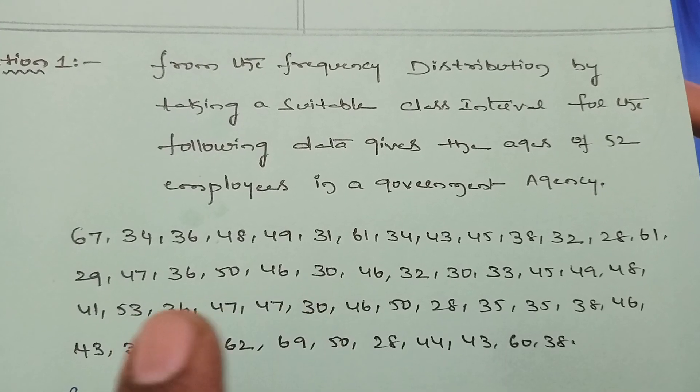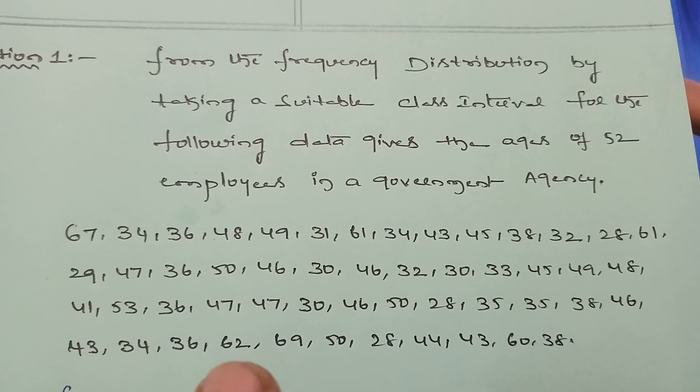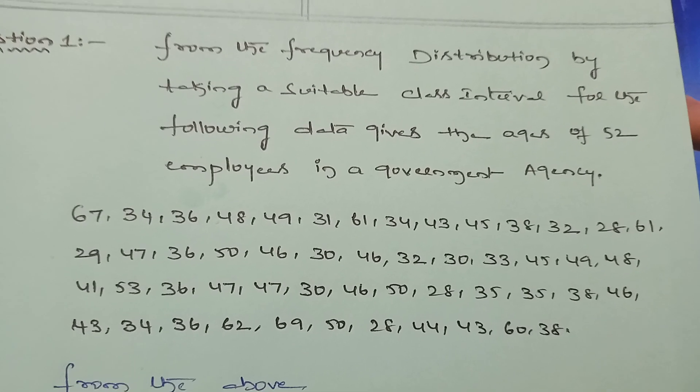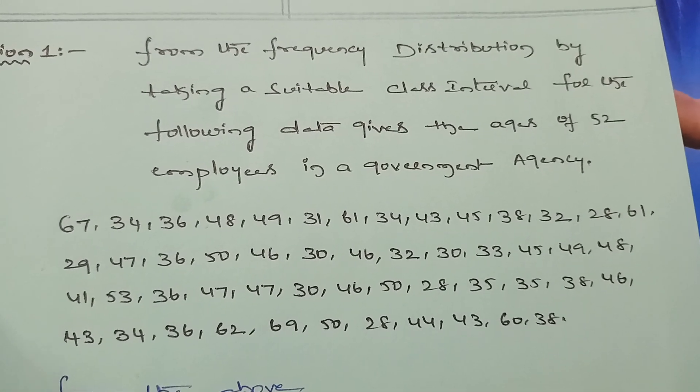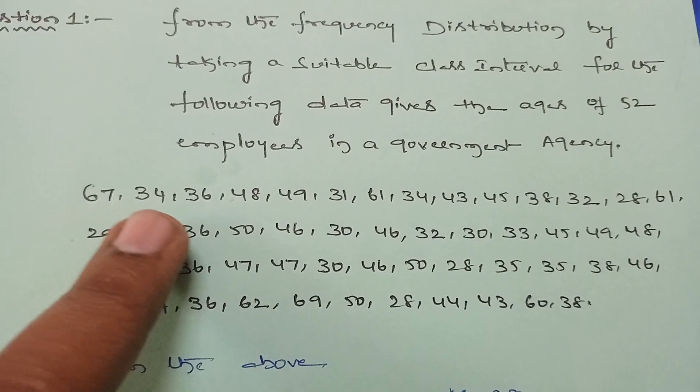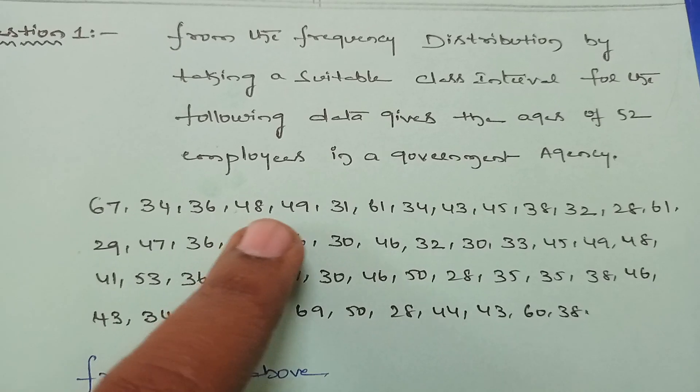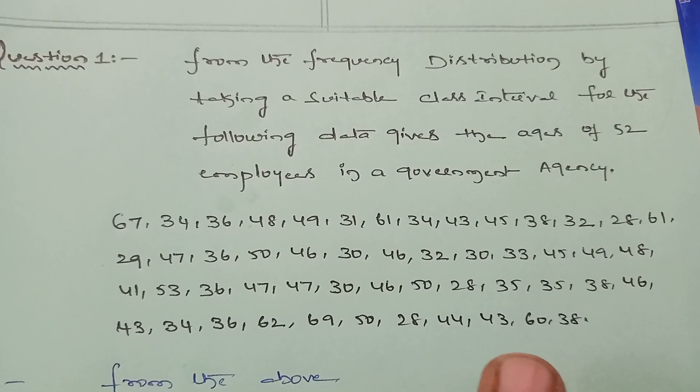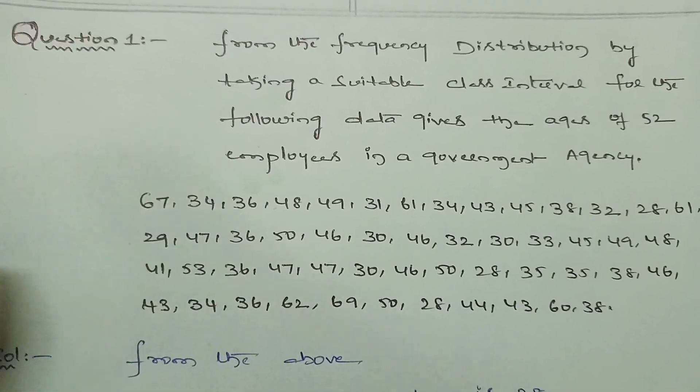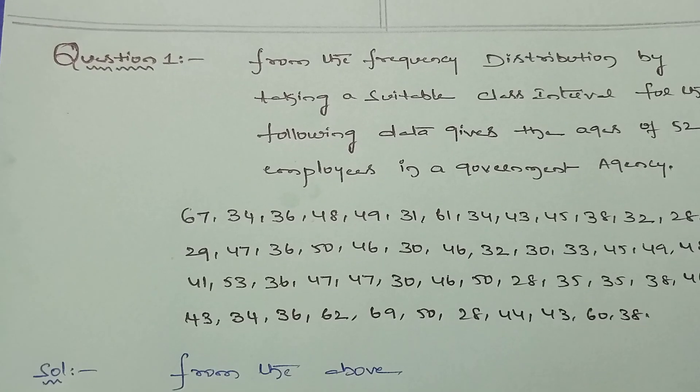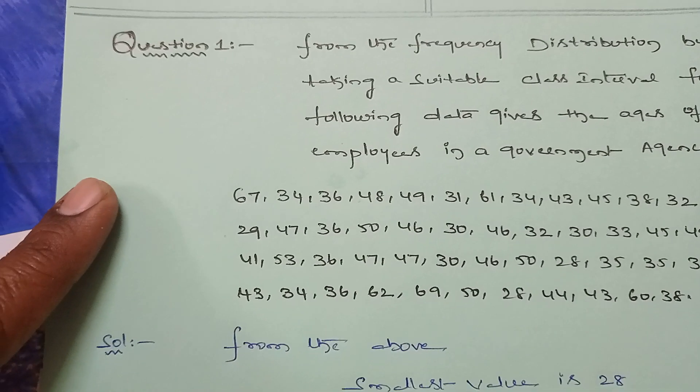This is the data of 52 employees who are working in a government agency. Their ages were 67, 34, 36, 48, 49, and so on, up to 52 observations. They are asking us to find the data using tally marks.